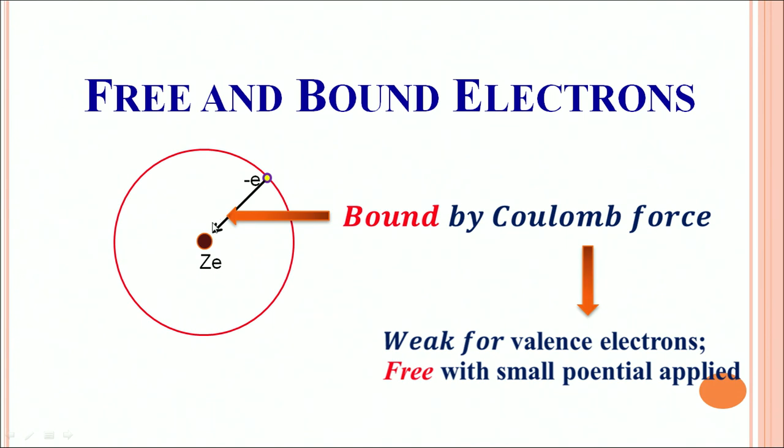To understand that we have to go back to the basic level of any material. At a fundamental level, at a microscopic level, any material consists of atoms. What is an atom? It is a positively charged nucleus around which electrons are orbiting in various orbits.